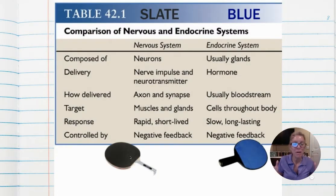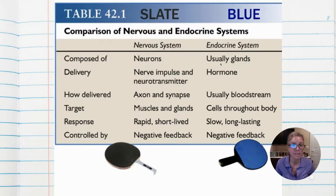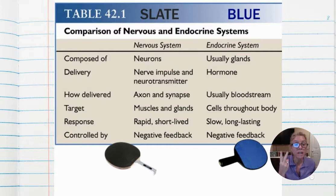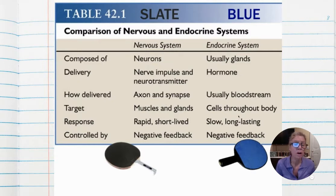To compare and contrast: the nervous system is composed of neurons while the endocrine system uses glands. The delivery system is a neurotransmitter via synapse versus a hormone via the bloodstream. Your nervous system can only impact two things — muscles and glands: it makes muscles contract and makes glands secrete. The endocrine system targets cells throughout the body. The nervous system is very rapid; the endocrine system is slow and long lasting. They can both be controlled by negative feedback.